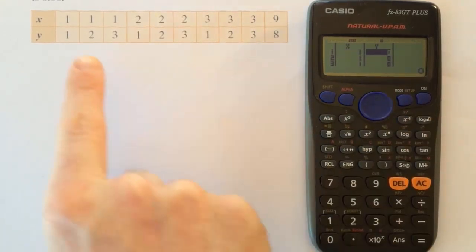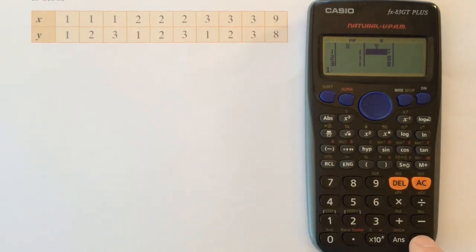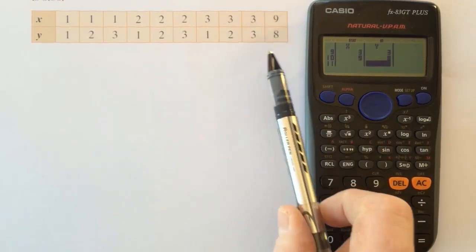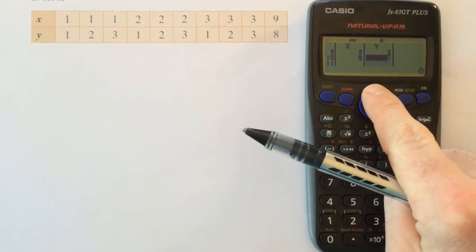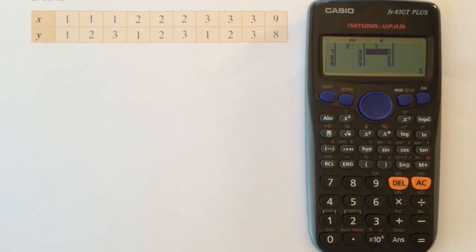And now I'm going to enter in the y data. Again, it's probably a good idea to double check that all the pairs of data are correct. I can use these arrow buttons to do that. But when I'm happy that everything is entered correctly, I now press the AC button.